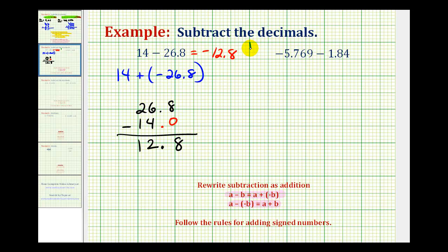Let's take a look at our second example. For the first step, we're going to write this as an addition problem. Subtracting positive 1.84 is the same as adding negative 1.84. As an addition problem, we're going to have negative 5.769 plus negative 1.84.